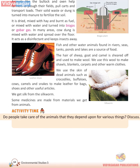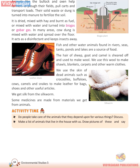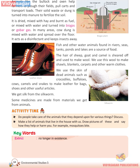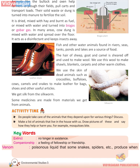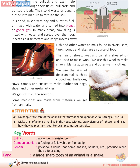Activity Time: Do people take care of the animals they depend upon for various things? Discuss. Make a list of animals that live in the house with us, draw pictures of these, and say how they help or harm you — for example, mosquito bites. Keywords: Extinct — no longer in existence. Companionship — a feeling of fellowship or friendship. Venom — poisonous liquid that some snakes and spiders produce when they bite or sting. Fang — a large sharp tooth of an animal or a snake.